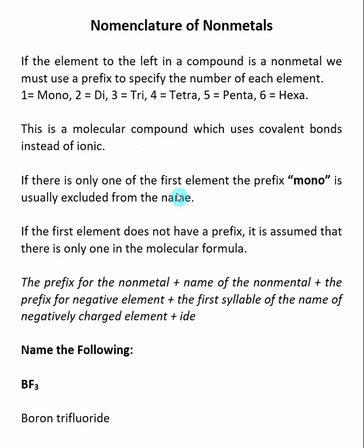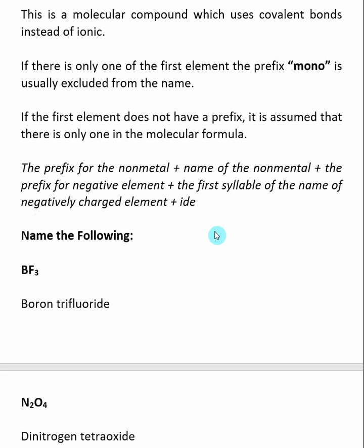If there's only one of the first element, the prefix mono is usually excluded from the name, and likewise, if the first element does not have a prefix in the name, it is assumed that there is only one of them in the molecular formula.